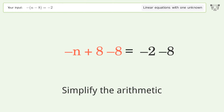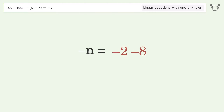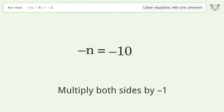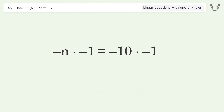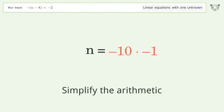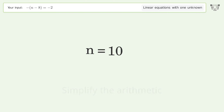Simplify the arithmetic. Convert n into a positive number — multiply both sides by negative 1. Remove the ones and simplify the arithmetic. And so the final result is n equals 10.